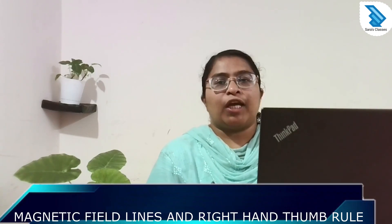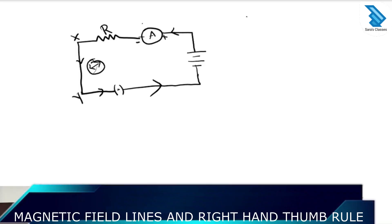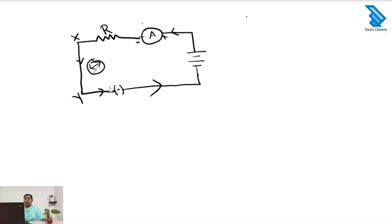Welcome to Sarah's class. Today we are discussing the topic magnetic effect of electric current. We will first look at a current carrying conductor XY, where a resistor, an ammeter, a battery, and a key are connected. When we close the key, current flows from the positive terminal to the negative terminal.